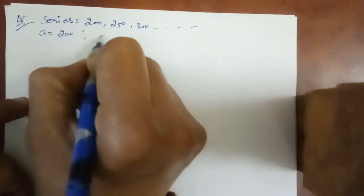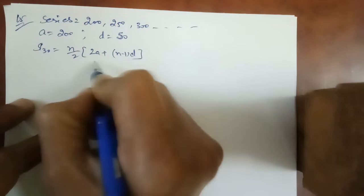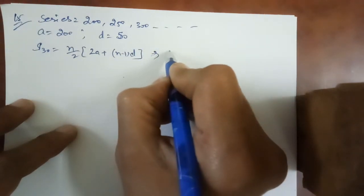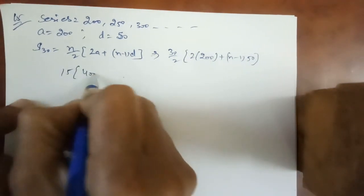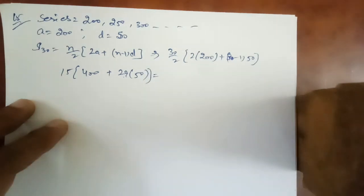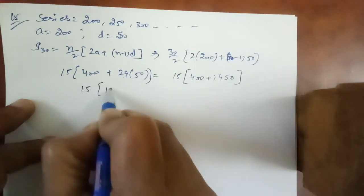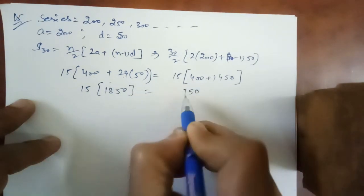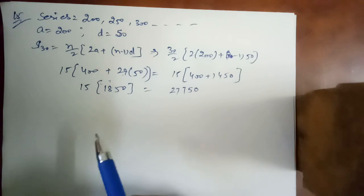How much money the contractor has to pay as penalty if he has delayed the work by 30 days? The series is: 200, 250, 300 and goes up to. A is equal to 200, D is equal to 50. We have to find S30. That is n by 2, 2a plus n minus 1 into d. L is not given. So this is 30 by 2, 2 into 200 plus n minus 1 into 50. 15, 400, in place of n we adjust 30, plus 29 into 50. 15, 400 plus 1450. The answer is 27,750.